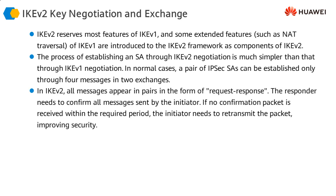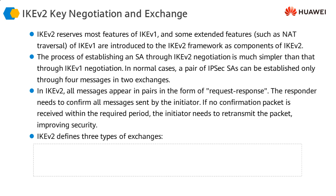In IKEv2, all messages appear in pairs as request-response cycles. The responder must confirm all messages sent by the initiator, and if no confirmation is received within the required period, the initiator retransmits the packet, which improves reliability and security. There are three types of exchanges in IKEv2: the initial exchange, the create child security association exchange (which is optional), and the informational exchange.